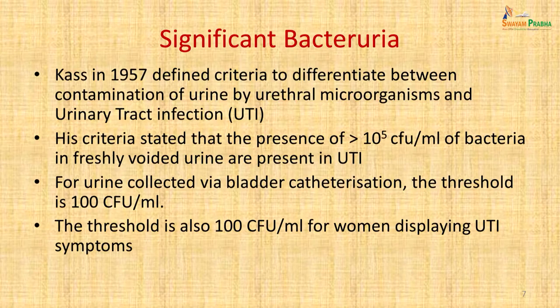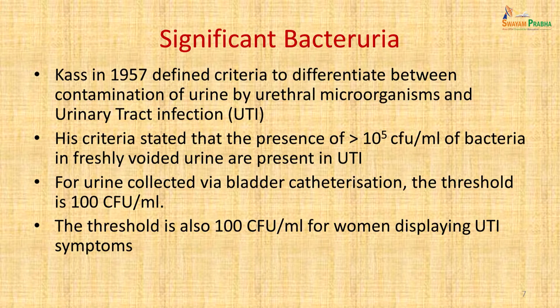When diagnosing urinary tract infection, the patient must have enough bacteria in the urine. Urine in the bladder is sterile, but as it passes through the urethra it collects organisms from the skin surface. Kass in 1957 defined criteria: more than 10⁵ organisms per ml of freshly voided urine indicates UTI. For catheterized urine, the threshold is 100 colony-forming units per ml. For symptomatic women, a count less than 10⁵ per ml should still be accepted as UTI.